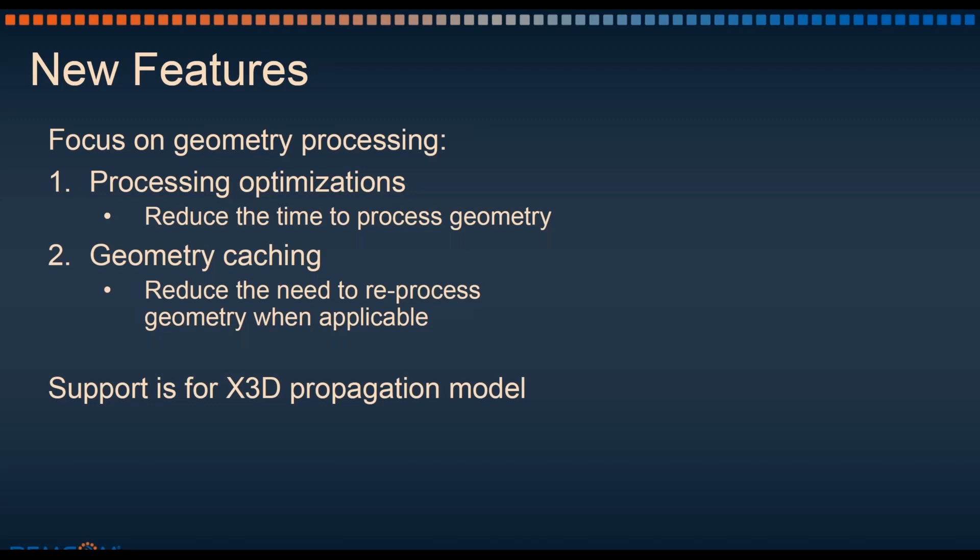For a brief overview of the new features, as I said, they're focused on geometry processing. The first major feature is processing optimizations, which are general improvements to our geometry processing that reduce the time needed to process the geometry. Second is geometry caching, which reduces or removes the need to reprocess geometry at the beginning of each simulation. Currently, these features are supported only by our X3D propagation model.